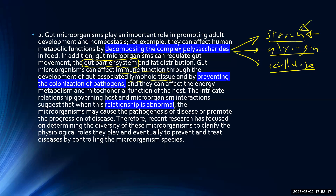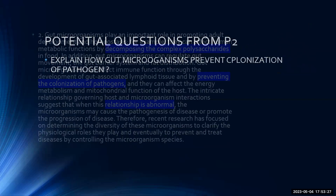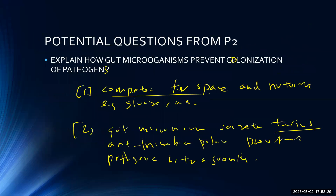Gut microorganisms can also affect energy metabolism and mitochondrial function of the host. Could they produce antibodies? No — antibodies are produced by B cells only, which are human cells. Bacteria produce antimicrobial proteins. They cannot produce antibodies. They produce antimicrobial proteins or toxins that can kill pathogenic bacteria.